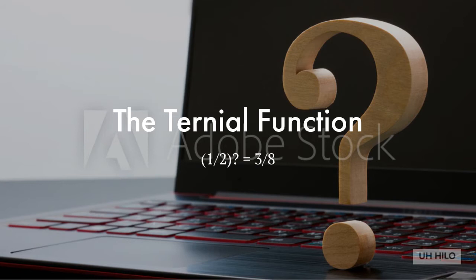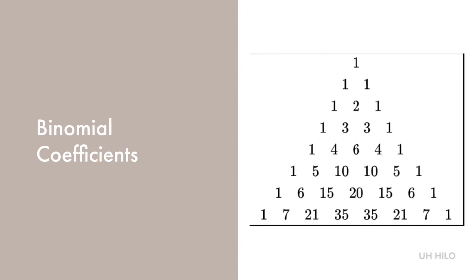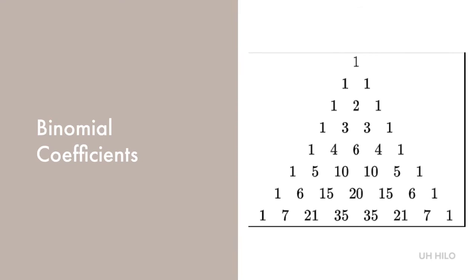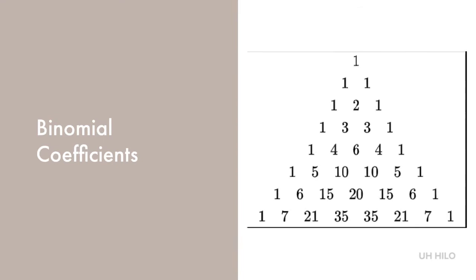Euler and Sterling worked on defining the factorial more formally for non-integer values. The binomial coefficient n choose k is the number of ways of picking k unordered outcomes from n possibilities. These are also known as combinations or combinatorial numbers. We can calculate these as n factorial divided by k factorial times n minus k factorial. A fun way to calculate these is using Pascal's triangle, which you see depicted here on the right.